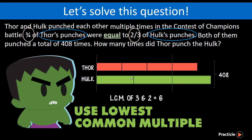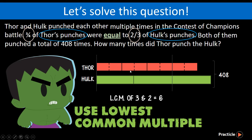The next thing we need to do is ask ourselves: how do we make the 3 units here into 6 units? We do that by dividing each original unit into 2. So we divide one big unit of Thor into 2 smaller units, and do the same for every unit that Thor has. Now for Hork's units — to make the 2 units into 6 pieces, we divide one big unit into 3 pieces and do the same for the rest. Now the number of units for Thor and Hork are the same.